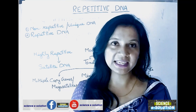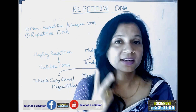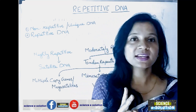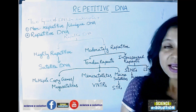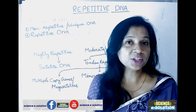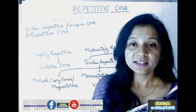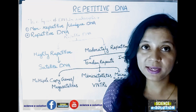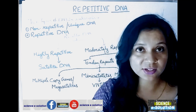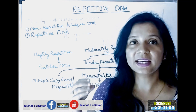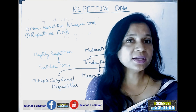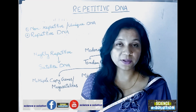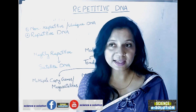In eukaryotes, there are two types of DNA: one is non-repetitive DNA and the second is repetitive DNA. The non-repetitive DNA is also known as unique DNA. This unique DNA codes for proteins — it transcribes for mRNA, which then translates into various proteins. Only one to two percent of DNA in our body is non-repetitive or unique DNA.